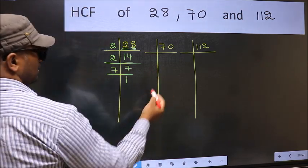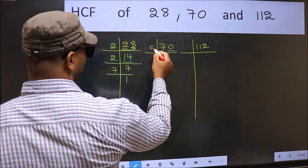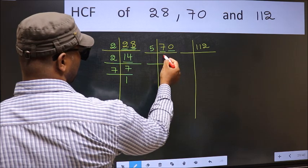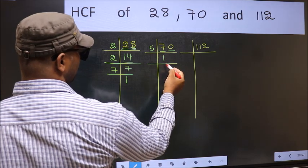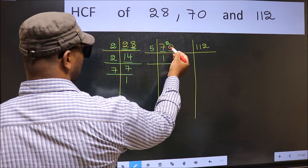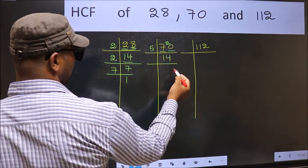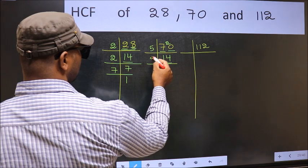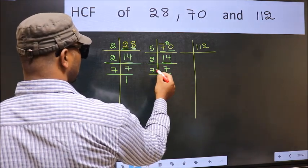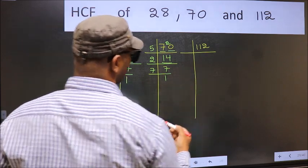Now the other number — 70. Last digit 0, so take 5. First number 7 — a number close to 7 in the 5 table is 5, 1, 5. 7 minus 5 is 2, carried forward 20. When do we get 20 in the 5 table? 5, 4, 20. Now 14 is 2, 7, 14. Now 7 is a prime number, so 7, 1, 7.